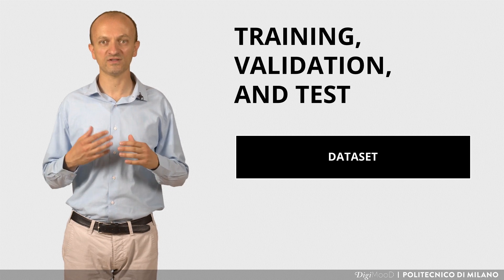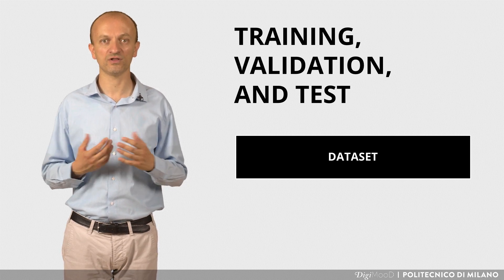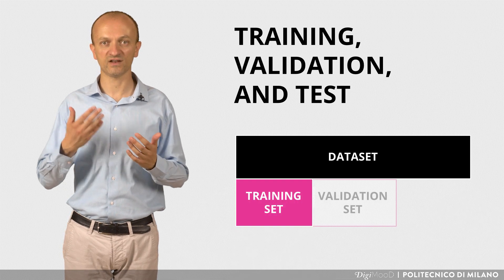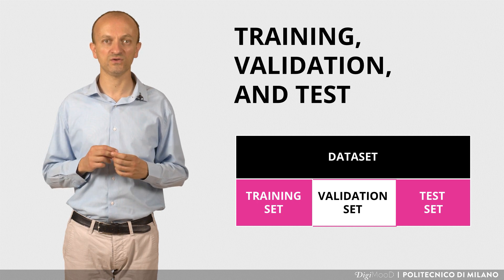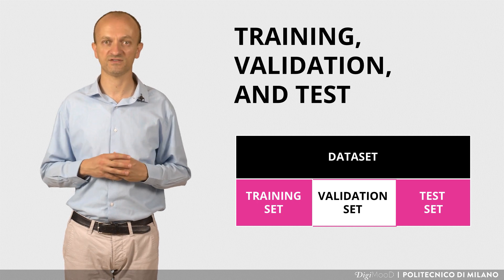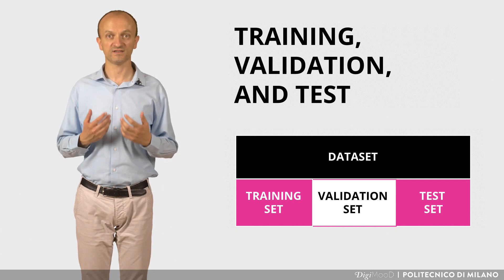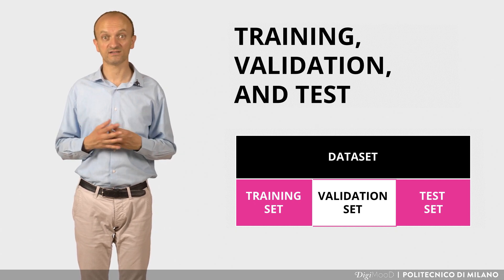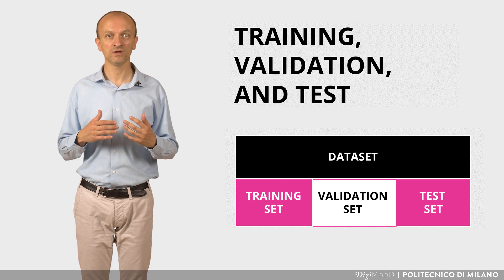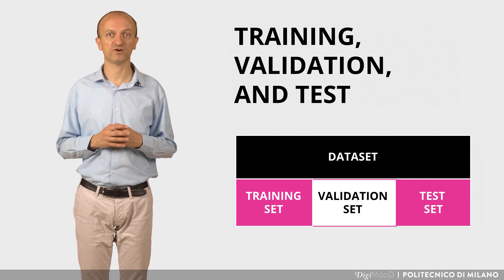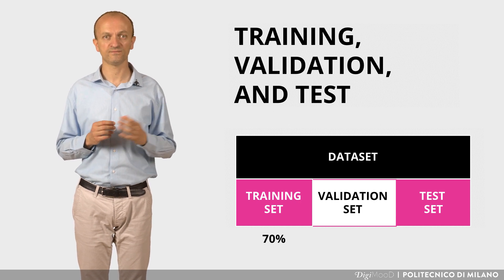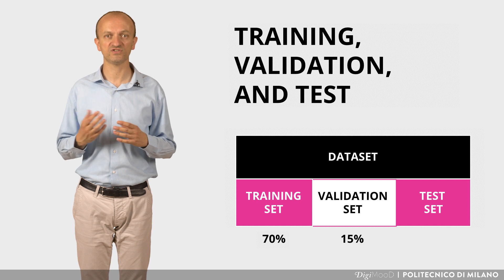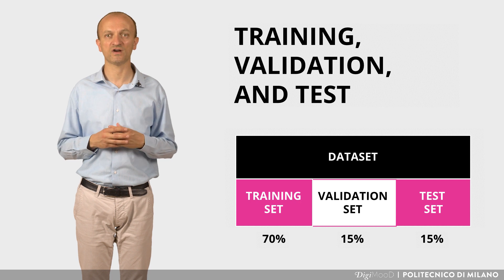Correspondingly, starting from the dataset available in a machine learning context, we define training set, validation set and test set as three subsets of the data used in the respective phases. Usually, these subsets are randomly selected from the whole set, deciding a priori the share to dedicate to each part. For example, you can decide to assign 70% of the data for learning, then reserving 15% for the validation phase, and preserving a final 15% for the final test.